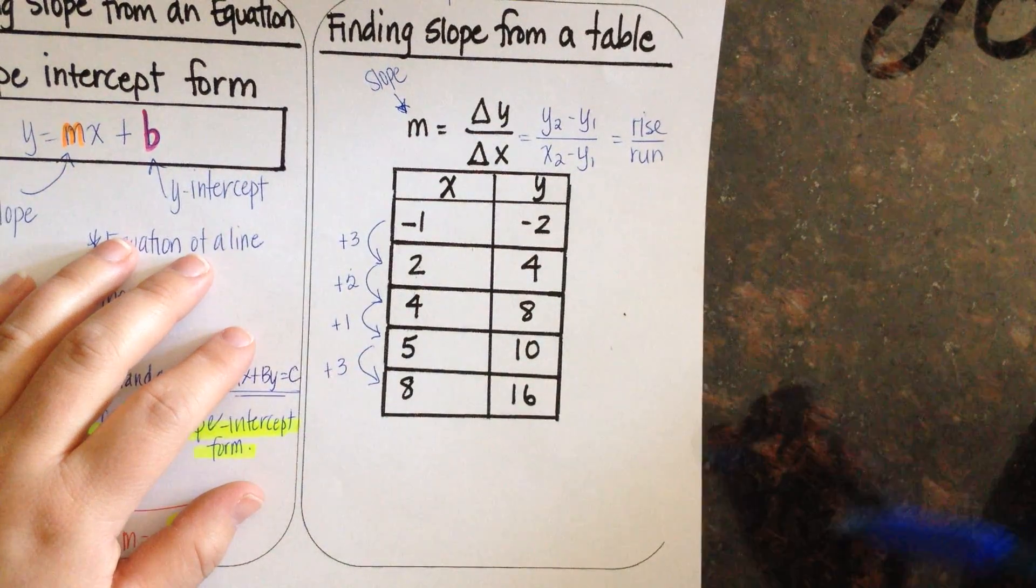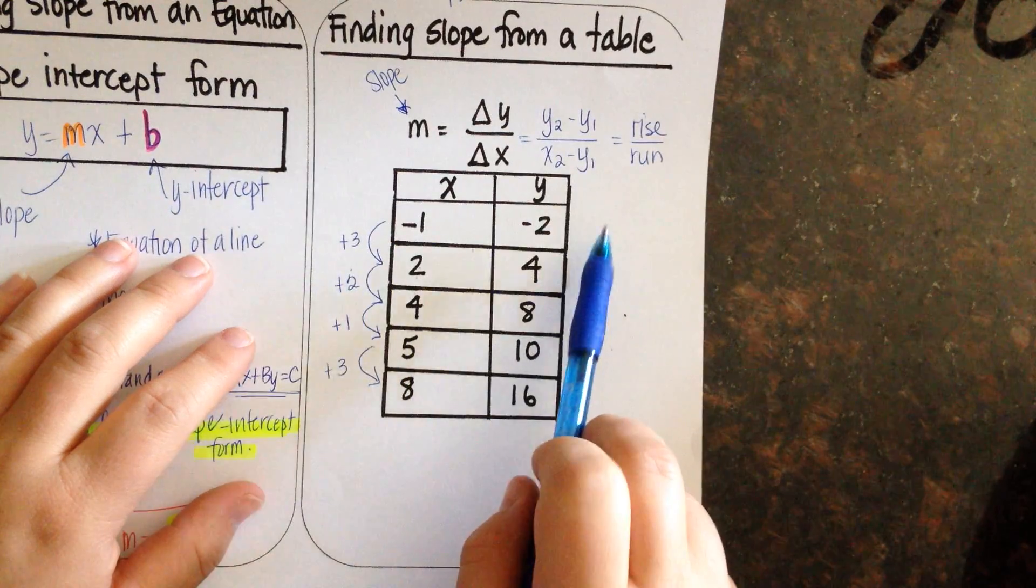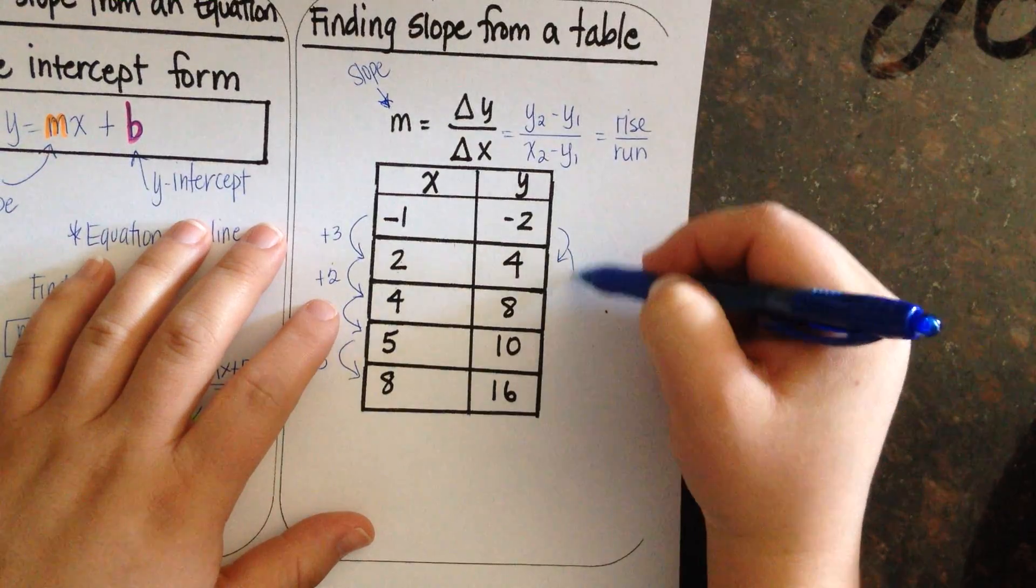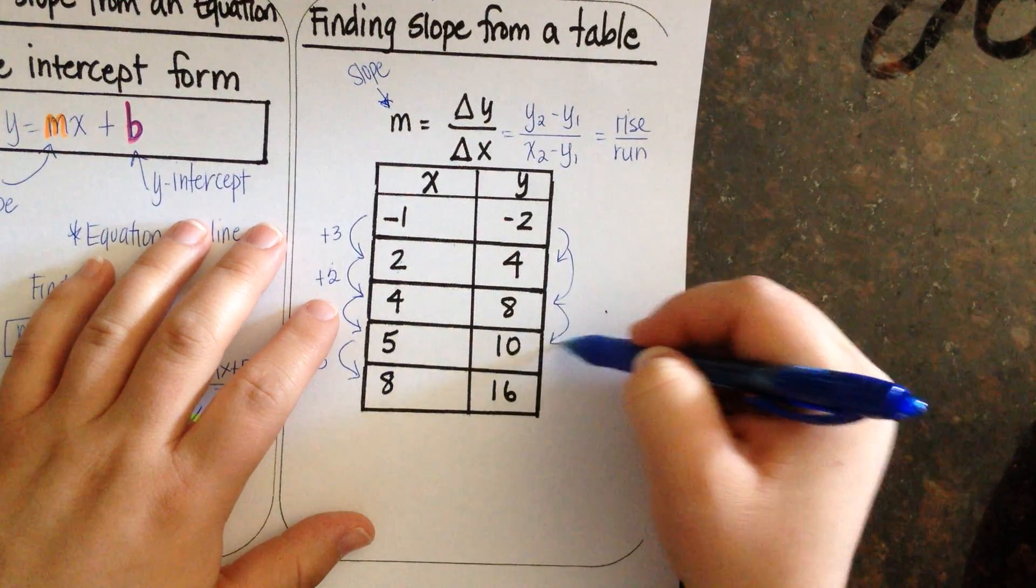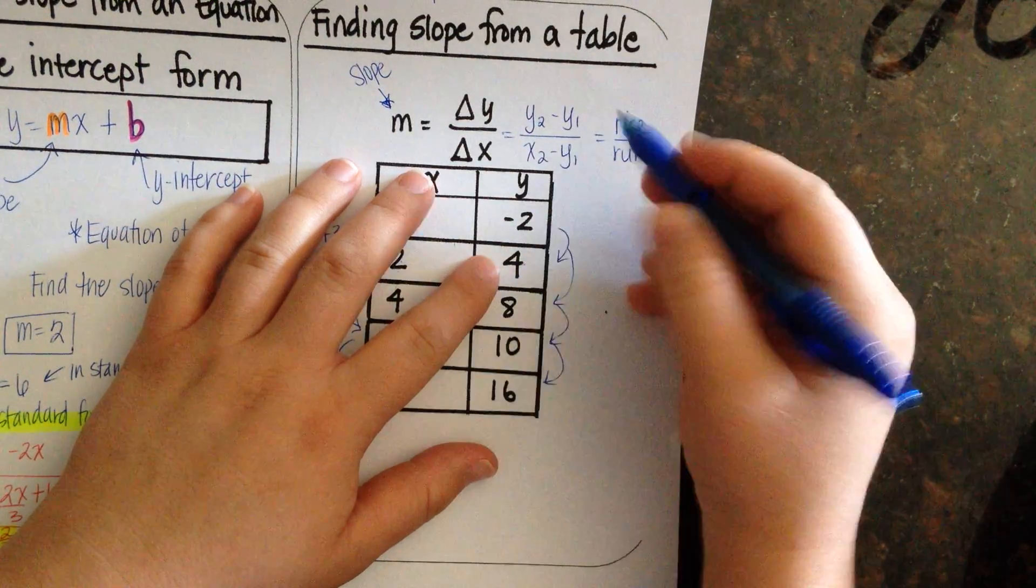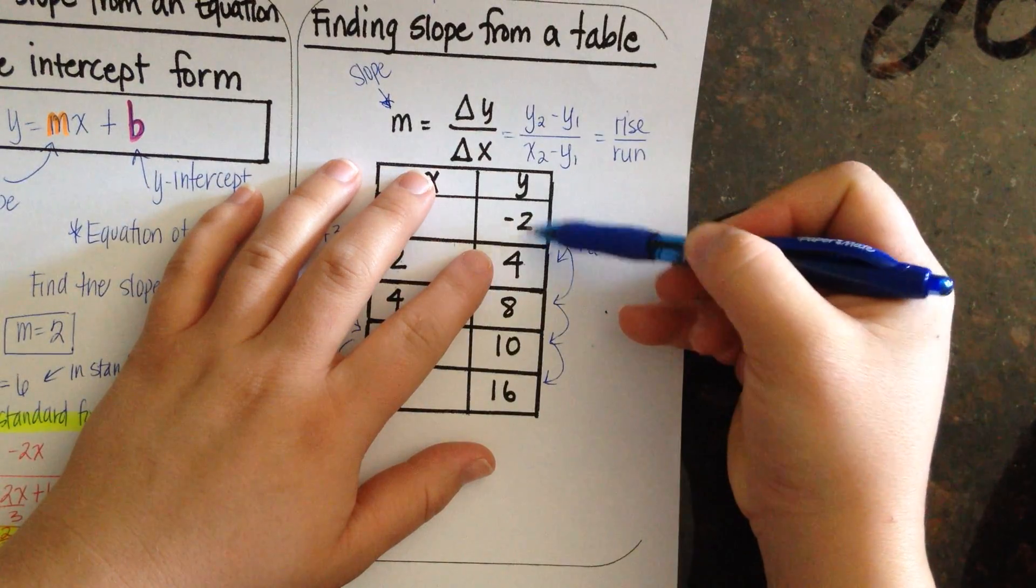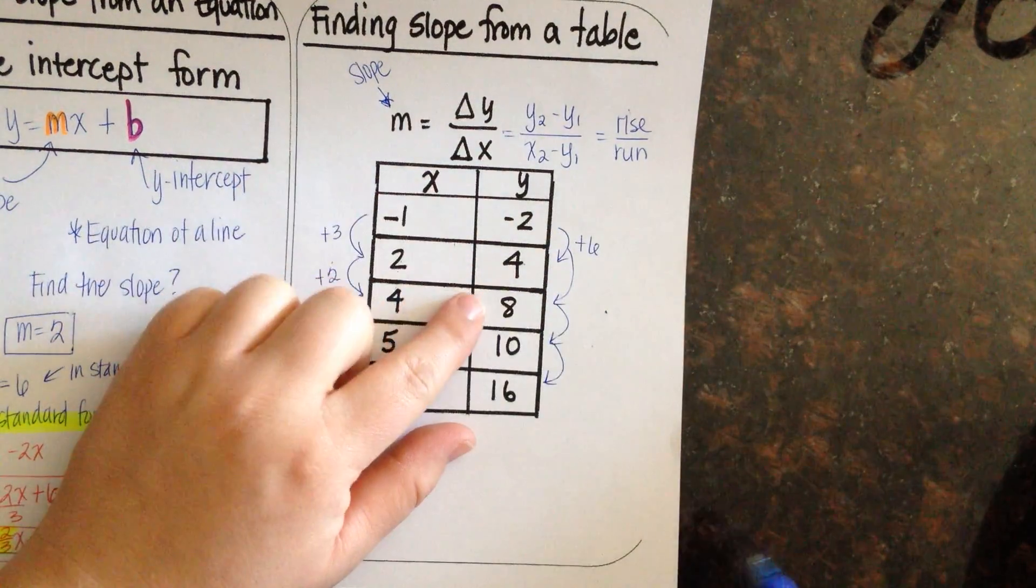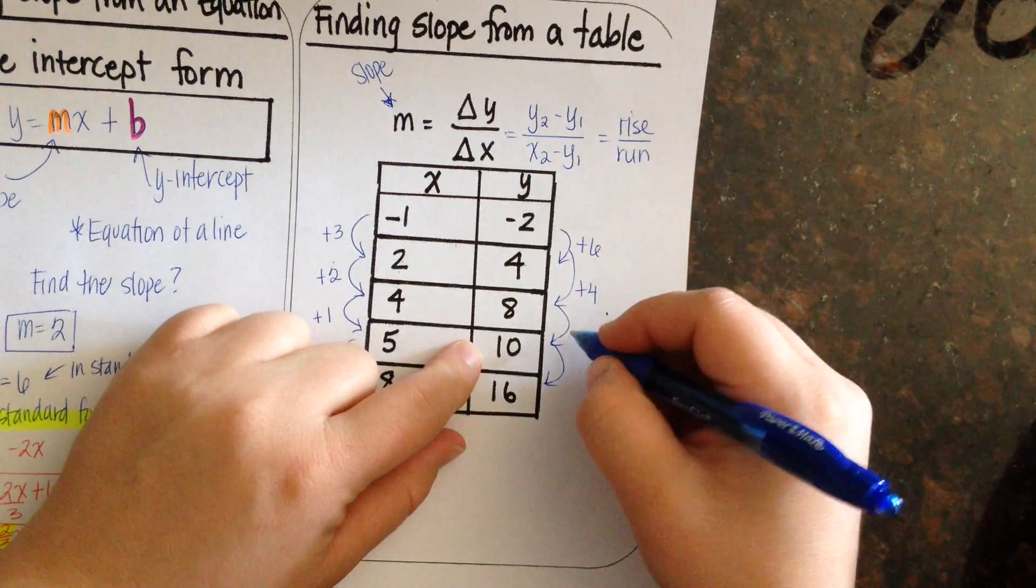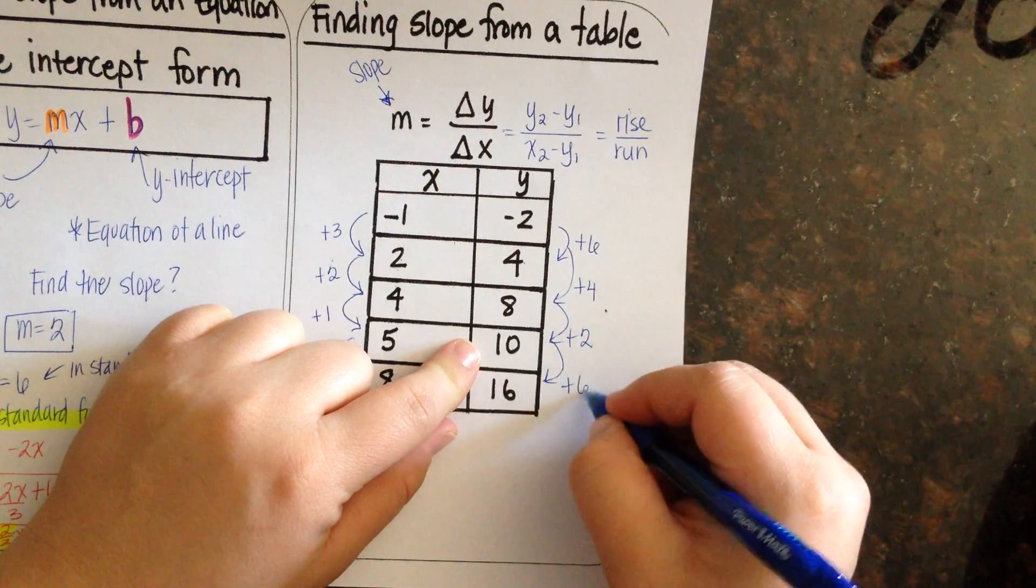Now, we're not looking for a pattern here, because what we're going to end up doing is comparing the change in y over here and the change in x. We're going to do the same thing for the y. Negative 2 to 4 is a difference of positive 6. Negative 2 to 0, and then plus 4 more. 4 to 8 is a change of 4. 8 to 10 is a change of 2, and 10 to 16 is a change of 6.